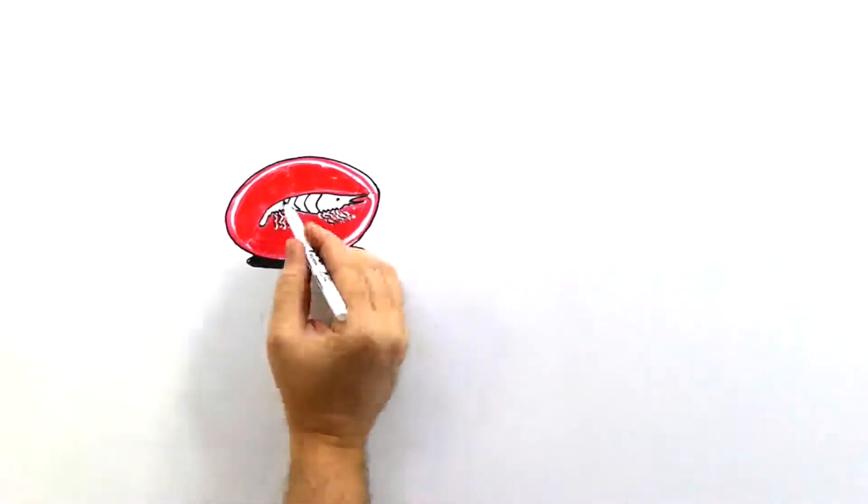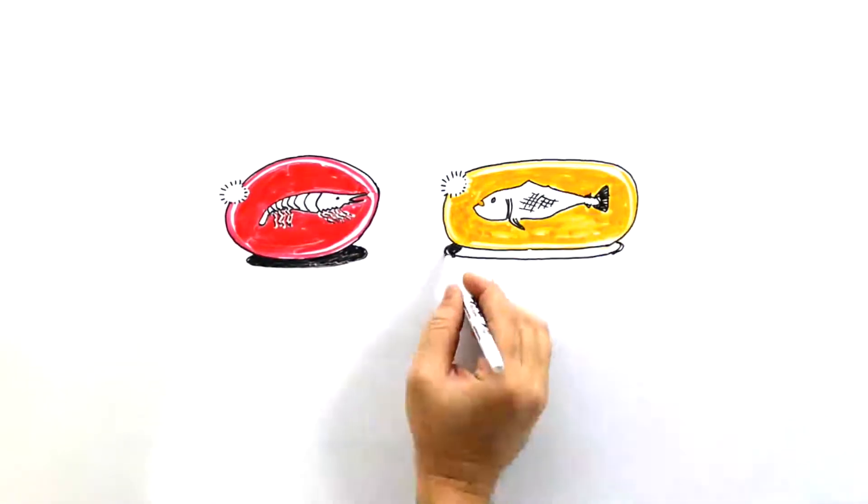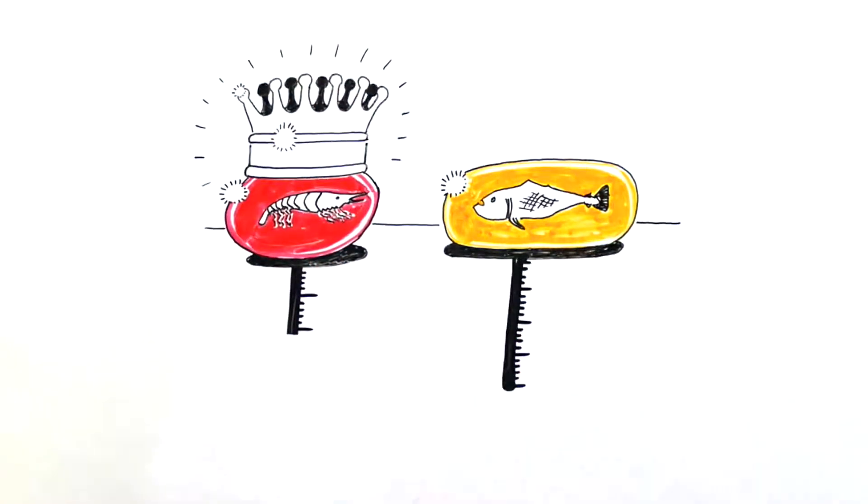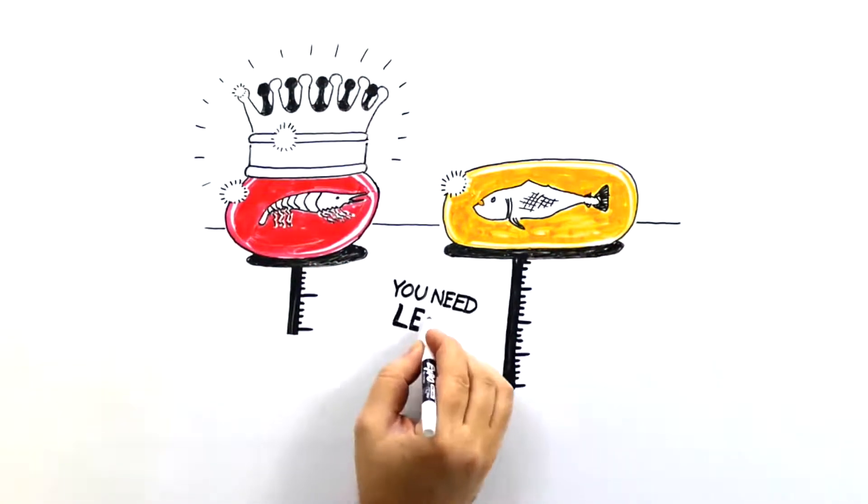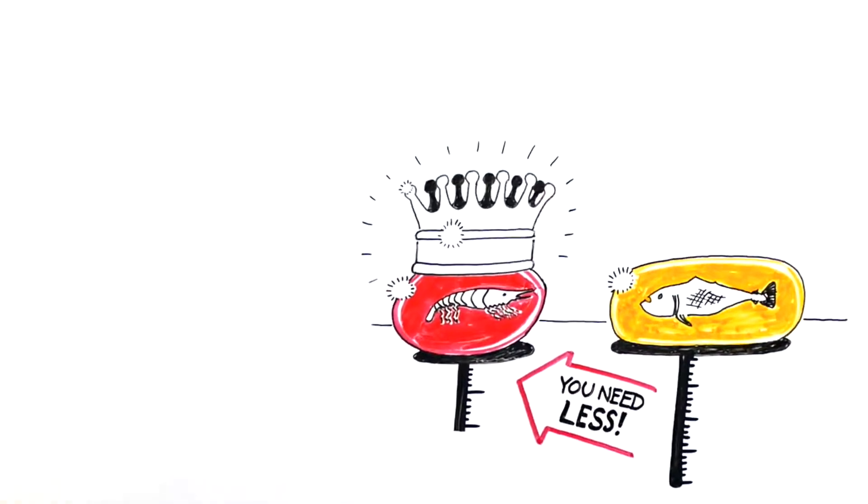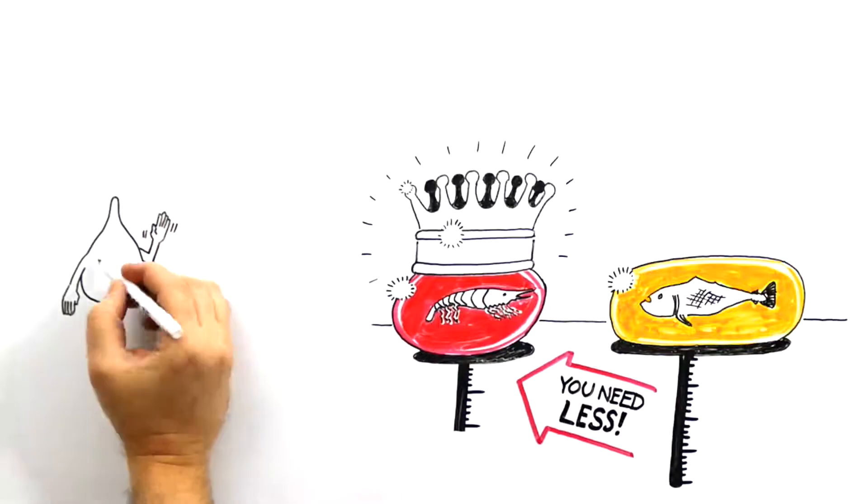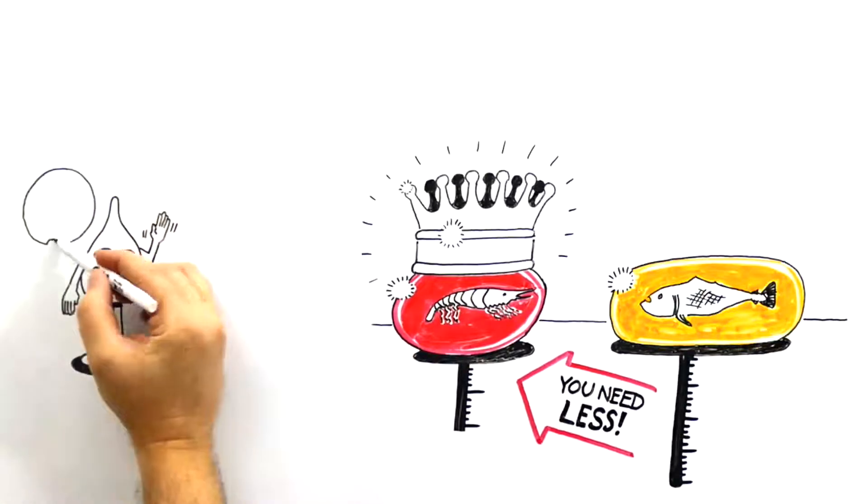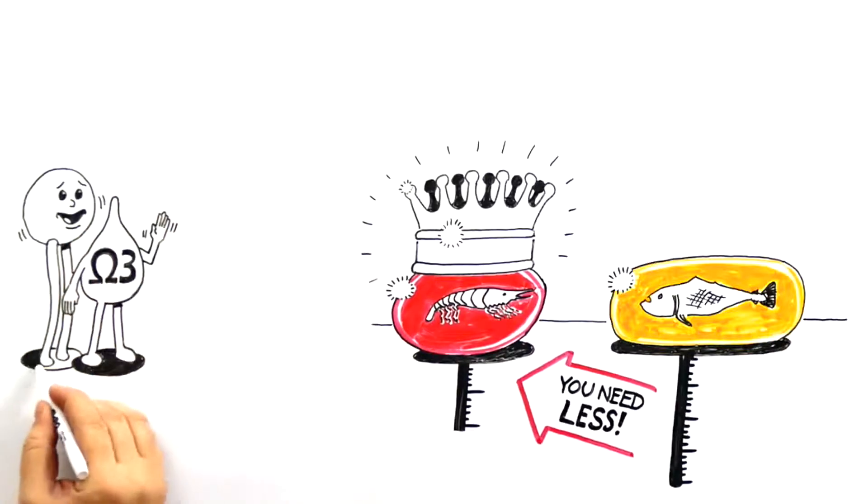Studies have shown that krill oil preferentially boosts the omega-3 index compared to fish oil, even though krill oil delivers lower amounts of omega-3s EPA and DHA on a gram-per-gram basis compared to fish oil. The main reason this happens is because of the phospholipids and their ability to carry omega-3s EPA and DHA into the blood more efficiently.